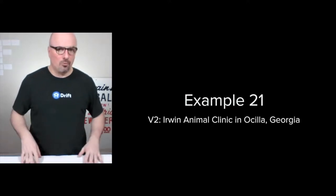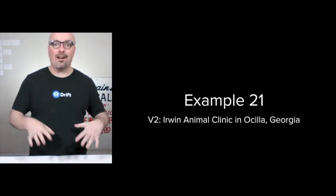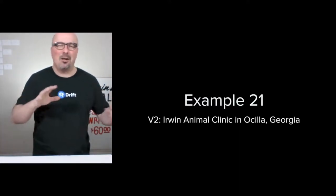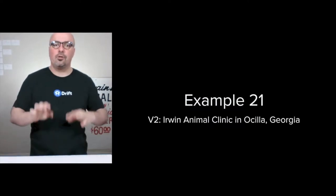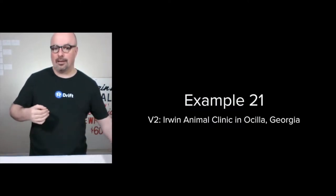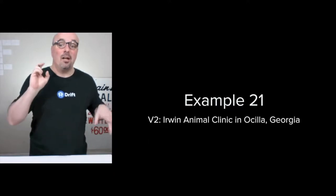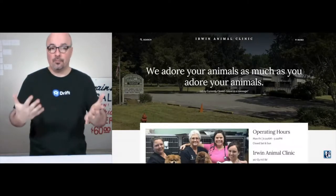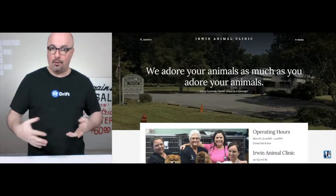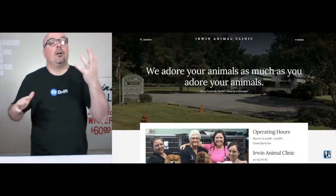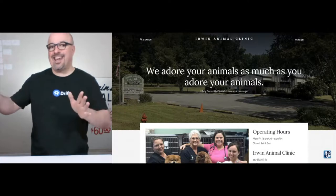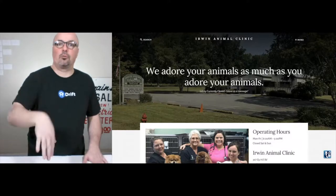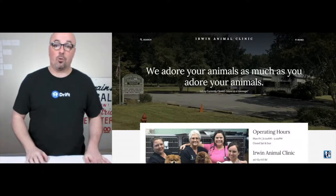Hi, I'm Jason Hobbs. This is example 21 of how I organize a digital marketing strategy for small business owners that are confused and unsettled by digital. This is version 2 of Irwin Animal Clinic in Osceola, Georgia, which was actually example 2 if you recall. This is the homepage of the working demo I've set up. When you go to jasonhobbsllc.com/example-21, scroll down and you'll see a big green button that takes you to the working demo.